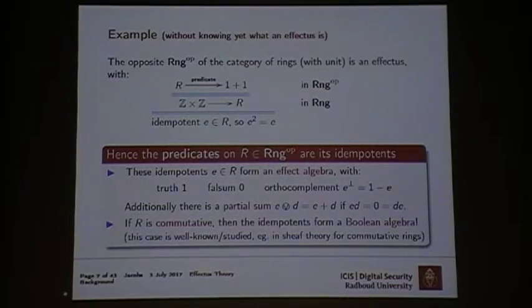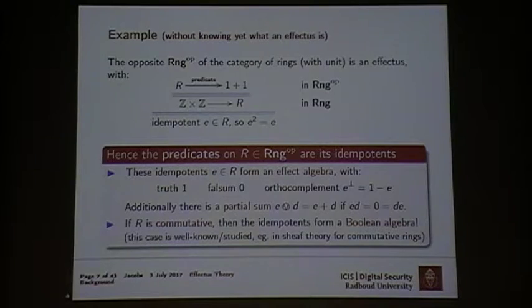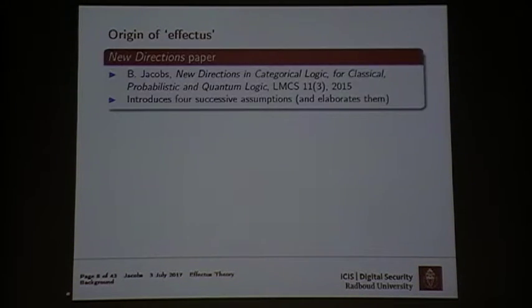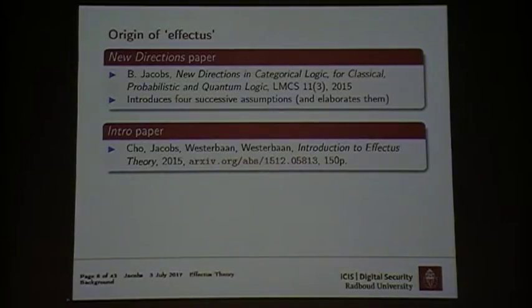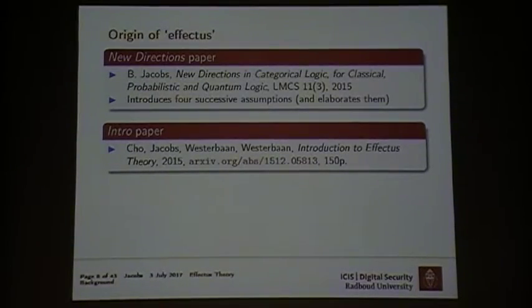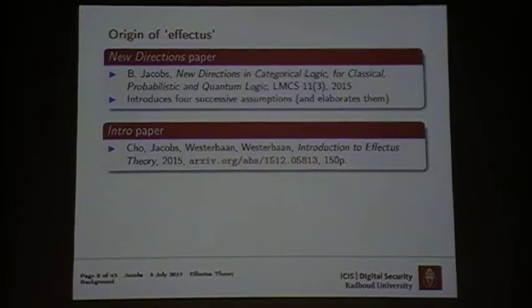My point is that effect algebras occur automatically in very basic mathematical theories and precede in a certain sense the classical theory focused on commutative rings. The idea of effectus comes from a paper I published three years ago called 'New Directions in Categorical Logic,' and a bit later we published an overview article on the archive which is being updated, and may at some stage transform into a book. The revision is already over 200 pages, so the body of material is substantial.